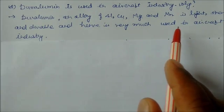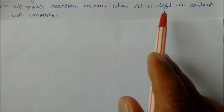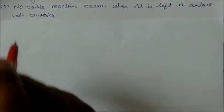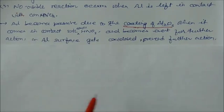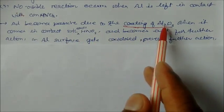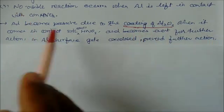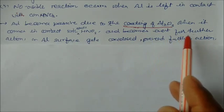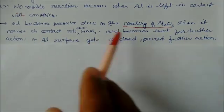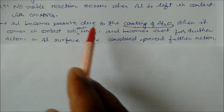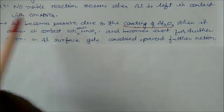No visible reaction occurs when aluminum is left in contact with concentrated nitric acid. Aluminum becomes passive due to the coating of Al2O3 which prevents reaction with concentrated HNO3. When it comes in contact with the acid, aluminum oxide forms on the surface preventing further action. Initially reaction will take place, but when this oxide layer forms, there is no further reaction with concentrated HNO3.